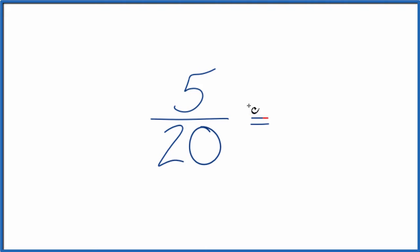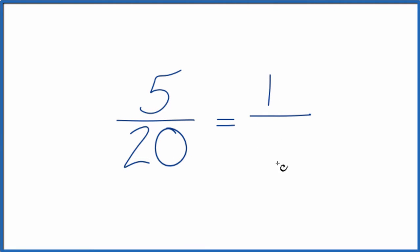We divide 5 by 5, that's 1. We divide 20 by 5, that's 4. So that's the simplified fraction, and these are equivalent fractions. They have the same values.